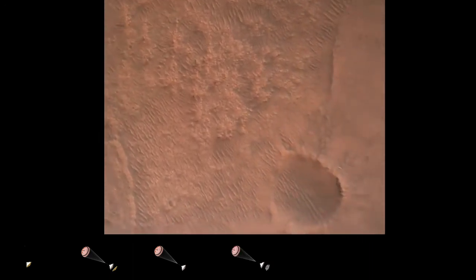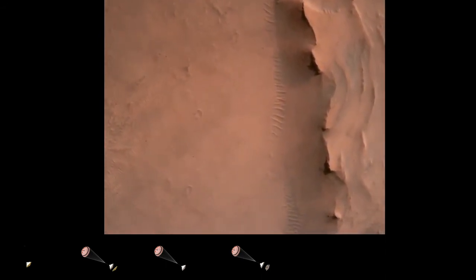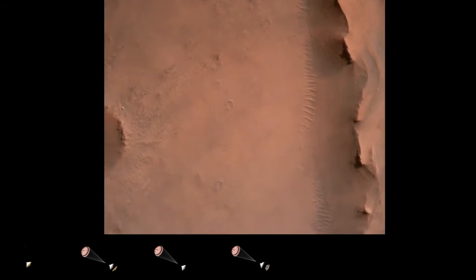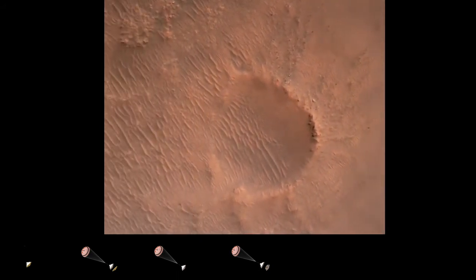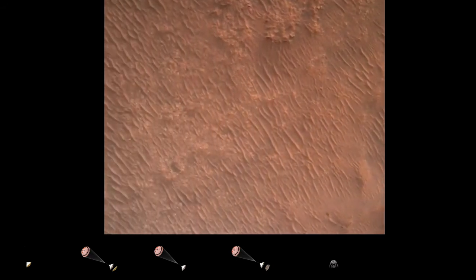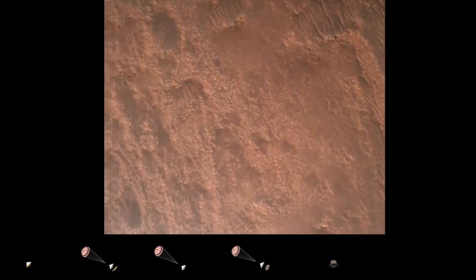Backshell separated. Current velocity is 83 meters per second at about 2.6 kilometers from the surface of Mars. We have confirmation that the backshell has separated. We are currently performing the divert maneuver. Current velocity is about 75 meters per second at an altitude of about a kilometer off the surface of Mars.